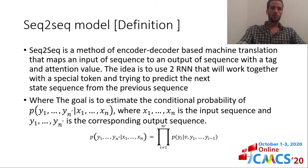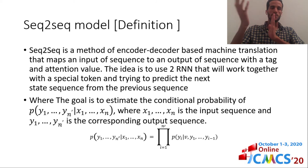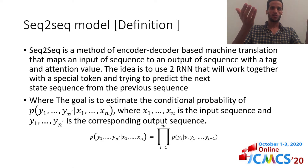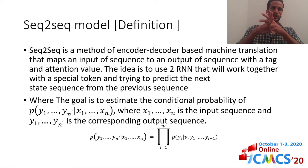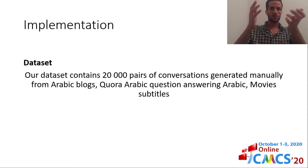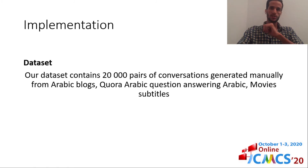The sequence-to-sequence model is a method based on an encoder and decoder for machine translation that maps an input sequence to an output sequence with attention. The idea is to use two RNNs that work together with a special token and try to predict the next value, where the goal is to estimate the conditional probability of the output sequence.